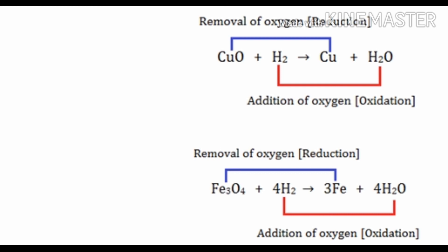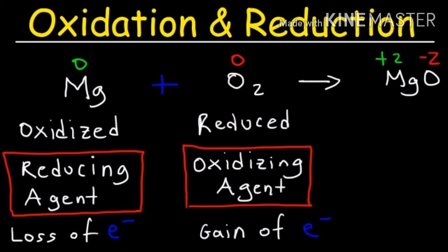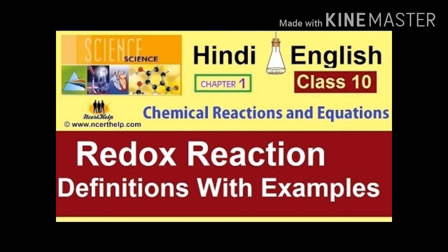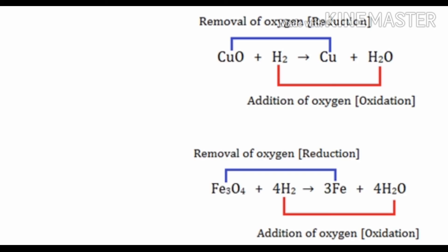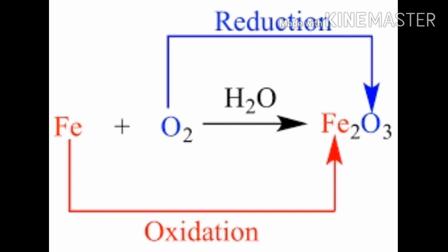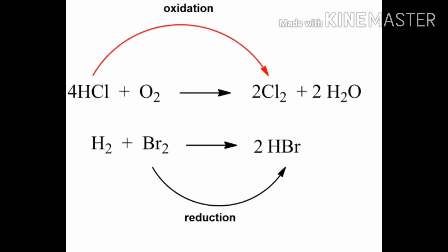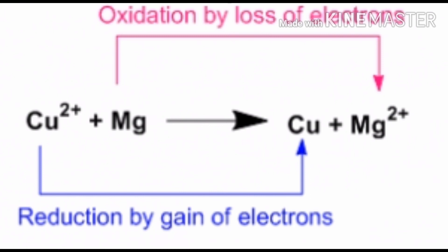The substance which brings about reduction is called a reductant or reducing agent. Now we will learn what is meant by redox reaction. The reaction in which both oxidation and reduction reactions occur simultaneously — one reactant is oxidized by the oxidant and the other is reduced by the reductant — is called a redox reaction. Redox reaction = reduction + oxidation. When positive charge on an atom increases or negative charge decreases, it is called oxidation. When positive charge decreases or negative charge increases, it is called reduction.